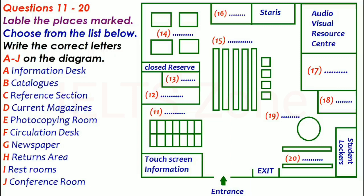Now, the stairs here on the left lead to level two only. On level two are most of the law books. To go up to the other levels of the library, you have to use a lift. Beside the stairs are the restrooms for this floor.